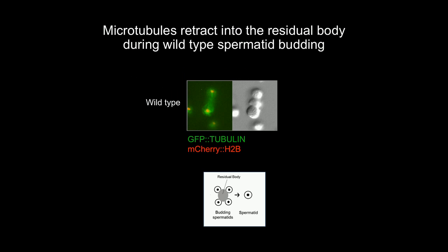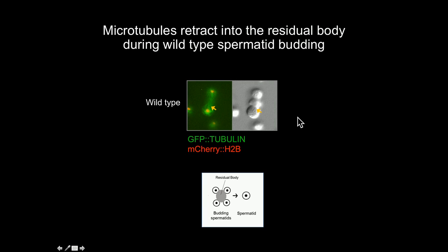Zooming in on the wild-type budding stage, as the spermatids progress into budding, the meiotic spindle actually retracts into the central residual body. Not only that, but there's an enrichment of the GFP tubulin right at the junction where the spermatid is budding from the residual body.